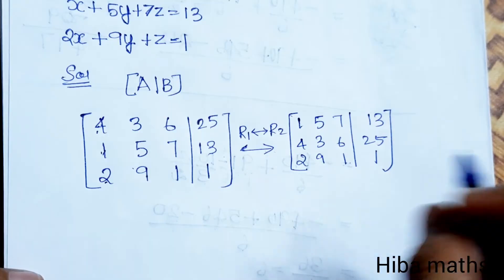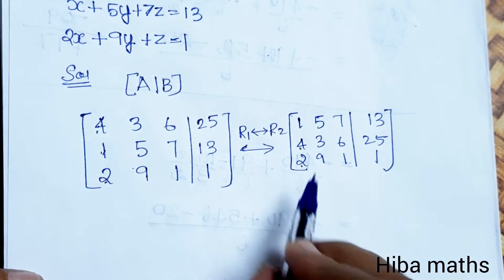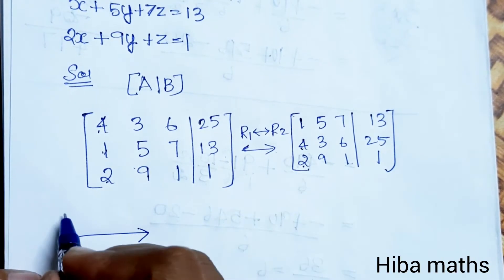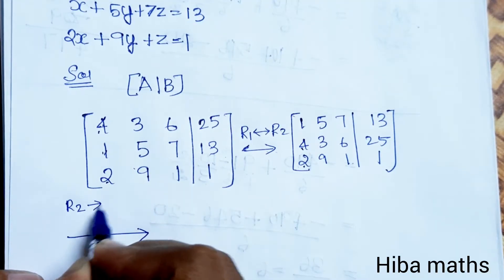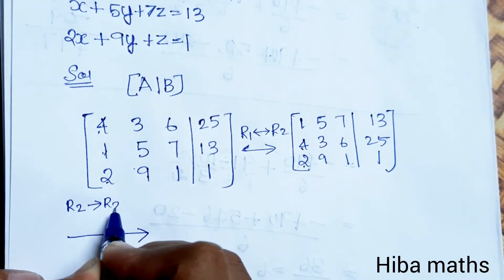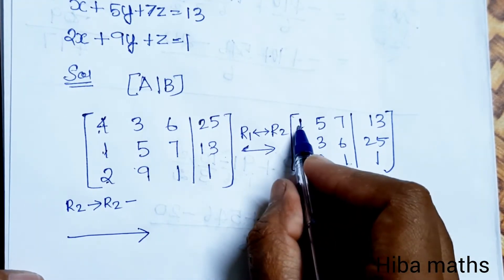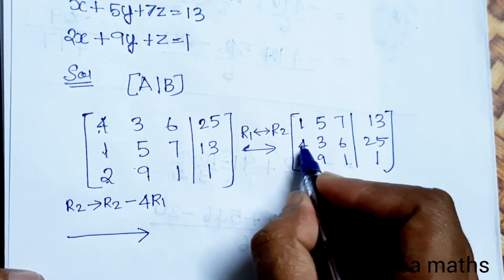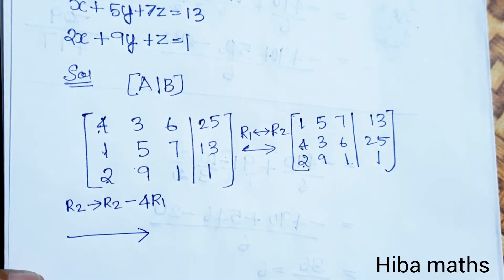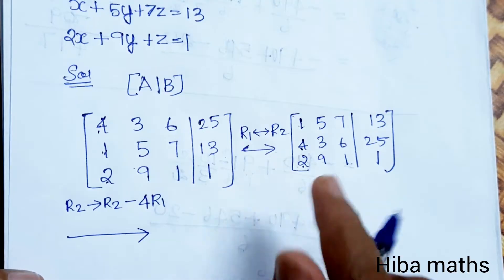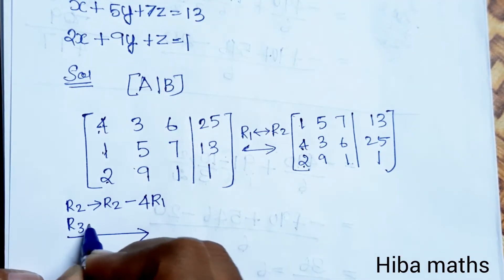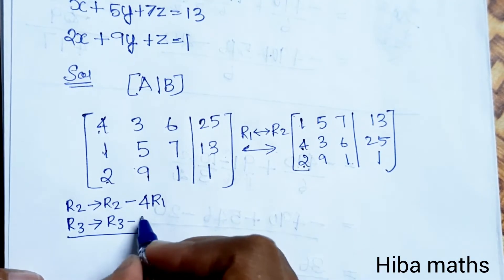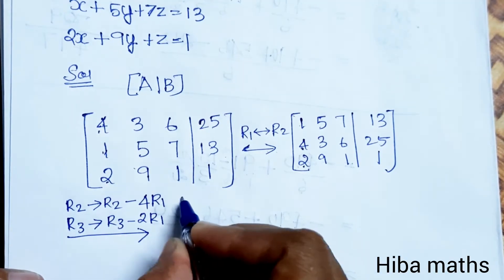Now we need zeros in the first column below the pivot. R2 changes to R2 minus 4 times R1. R3 changes to R3 minus 2 times R1.